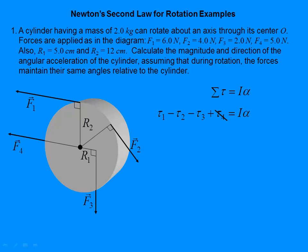T1 is positive and T2 and T3 are negative because T1 due to F1 would make it rotate counterclockwise, whereas torque two and torque three would make it rotate clockwise. Remember, counterclockwise is positive and clockwise is negative. You've got to be careful that you get all of the directions in here. It'll pop out as we solve for alpha.